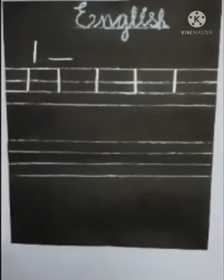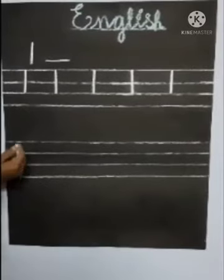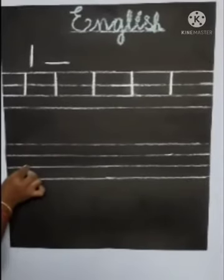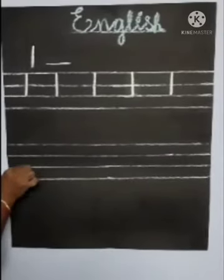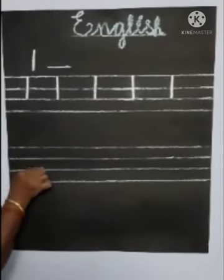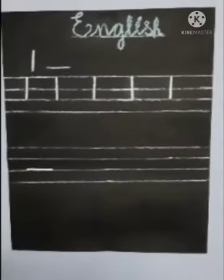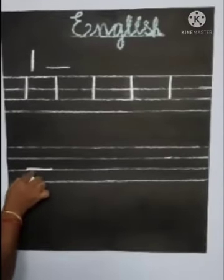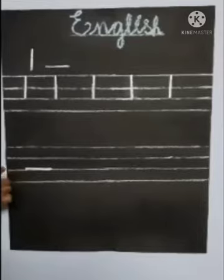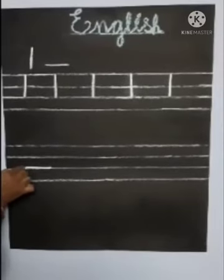Next we see slipping stroke. Again we see four limits: first limit, second limit, third limit, fourth limit. Here we learn slipping stroke. Put your pencil in third limit and draw a straight line from left to right. This is slipping stroke.